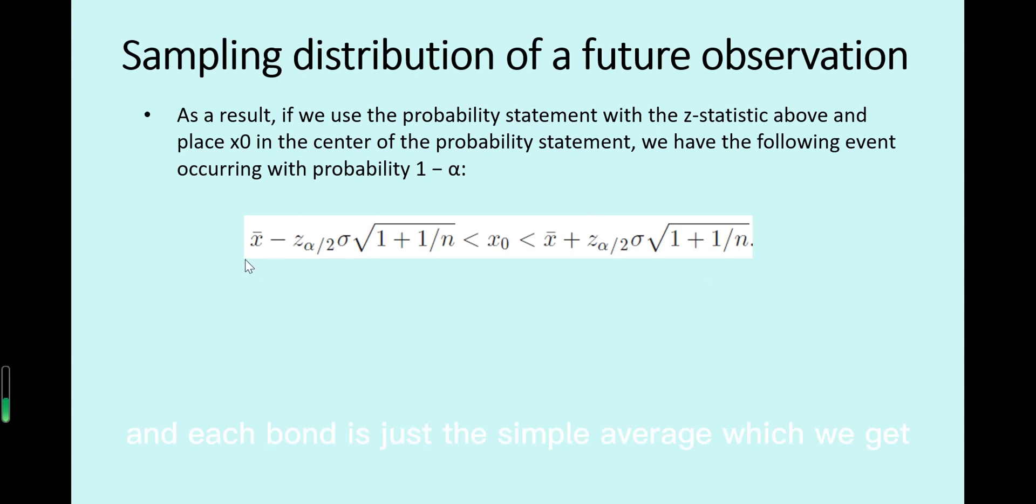And each bound is just the sample average which we get. Then minus the z_{α/2} for the z value times σ.